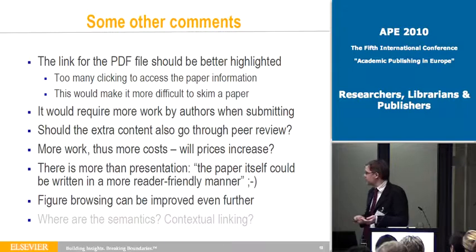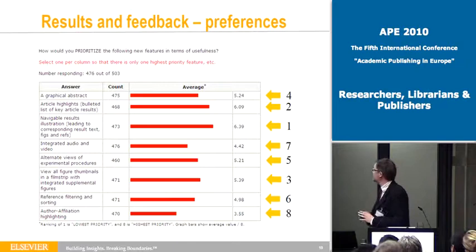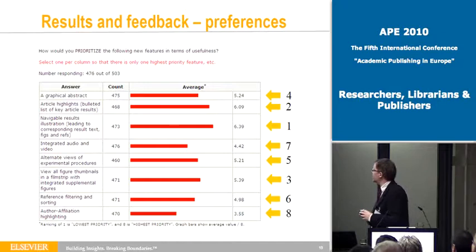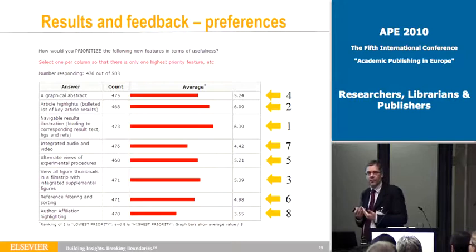Looking at the preference of what users liked: first is the navigable results list, then the one we unfortunately cannot implement yet, then the article highlights — the four or five bullets indicating what the article is about — which people really like. Third place is the figure thumbnails, the film strip, for getting a quick idea of the article by looking at figures. Fourth place is the graphical abstract. Those four are much better seen than the others, with author-affiliated highlighting coming in at eighth place.